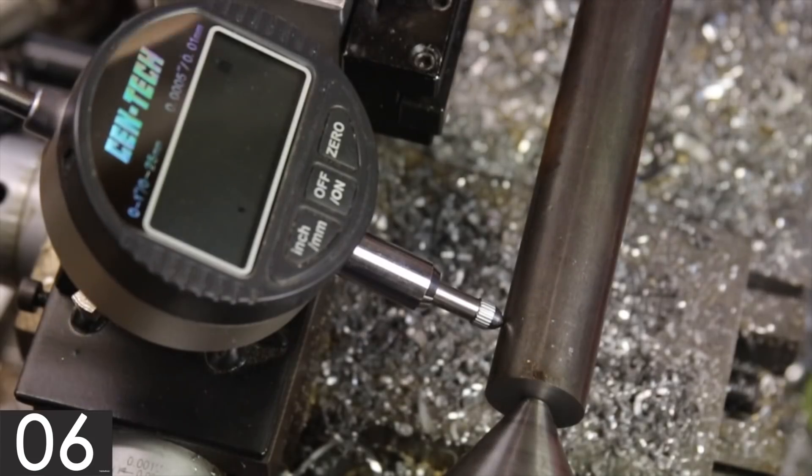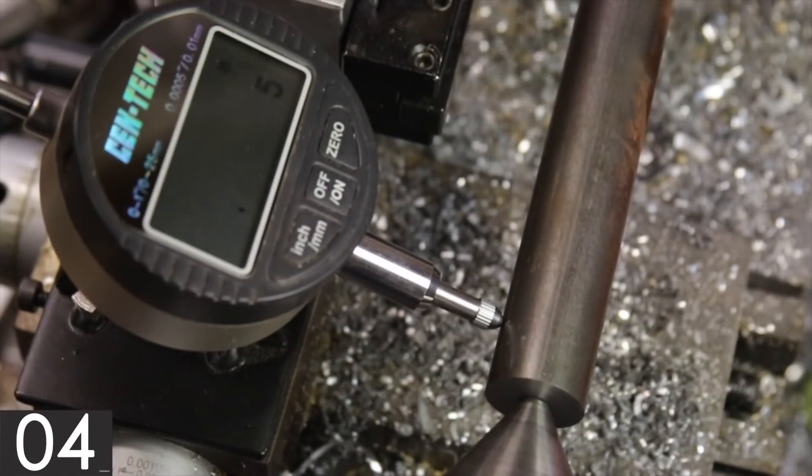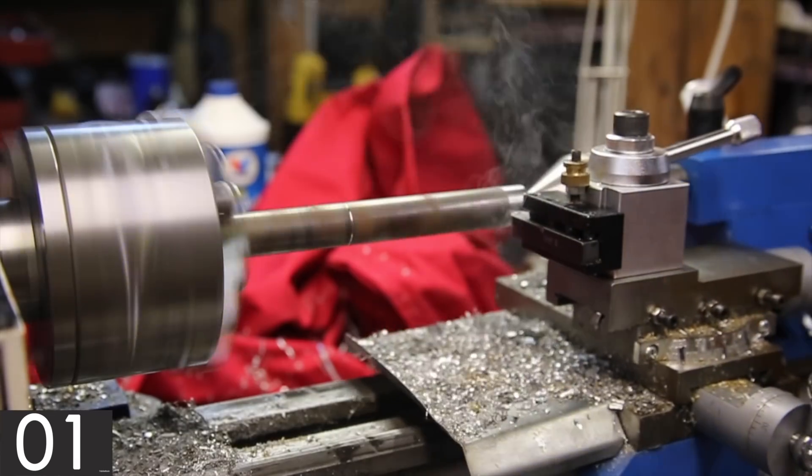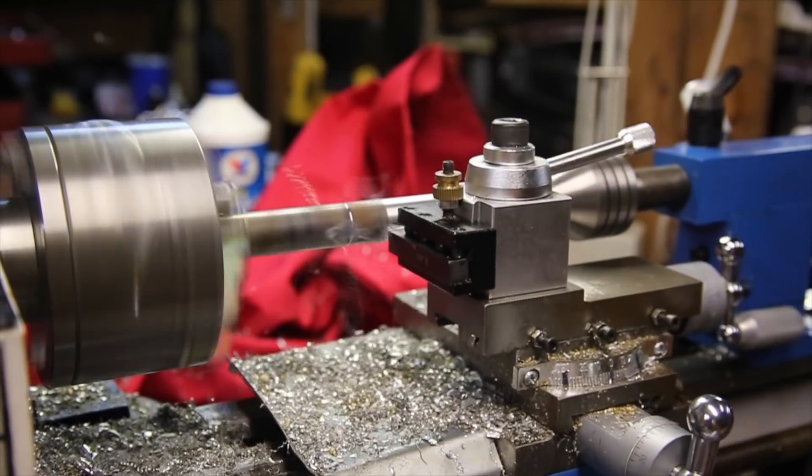Re-engage the live center with the part, tighten it, and confirm that it still spins true. Finally, test the alignment by turning down the diameter over a reasonable distance and measuring both ends.